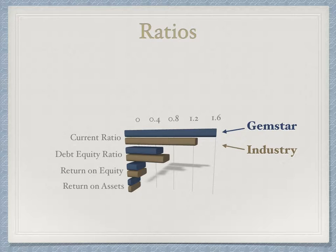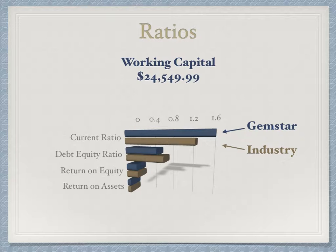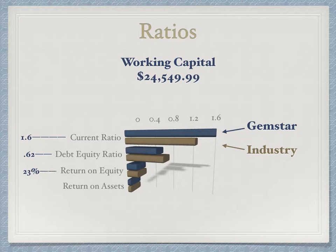Now I'm going to compare some important financial ratios to get an overview of how Gemstar is doing compared to the service industry as a whole. We have a working capital of $24,549.99, which is fairly positive for a new company. Our current ratio is 1.6, higher than the industry ratio of 1.3. Our debt-to-equity ratio is 0.62, somewhat lower than the industry ratio of 0.75. The return on equity for Gemstar is 23%, slightly higher than the industry average of 21.5%. And the return on assets comes in at 7%, just over the industry average of 6.5%. Overall, Gemstar is pretty close to industry averages, and that's a positive.